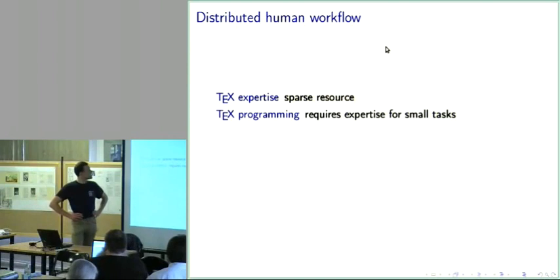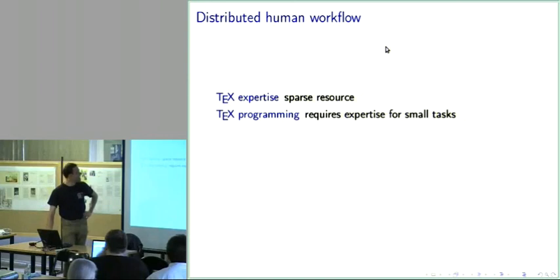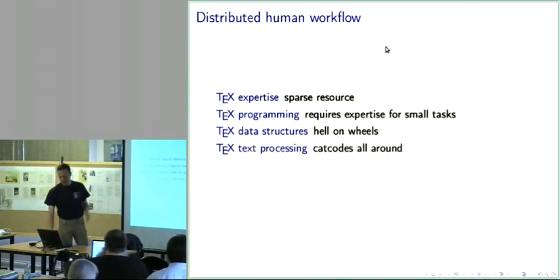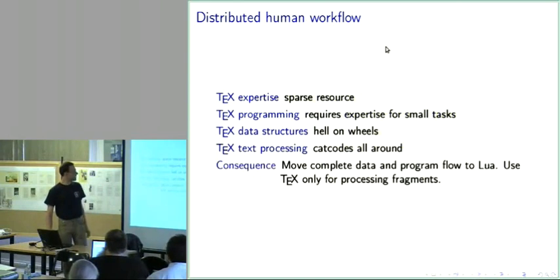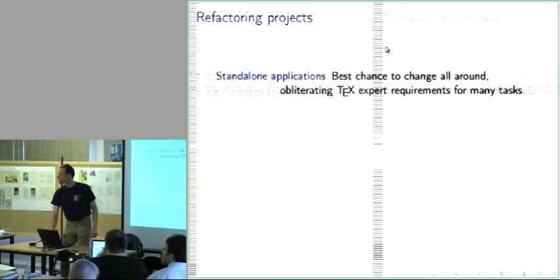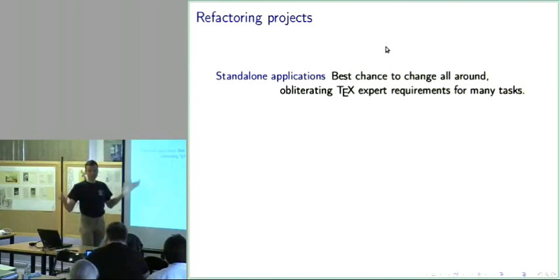The title was about 'TeX for lions and for ants.' This is important because TeX expertise is a sparse resource, and we don't want to drive the few TeX experts that are still living into early despair. TeX programming requires a lot of expertise even for conceptually small tasks, and TeX's data structures are not natural. Text processing is bogged down with cat codes — cat code problems are occurring all the time in large organizations. The consequence would be: move the complete data and program flow to Lua and use TeX only for processing fragments.